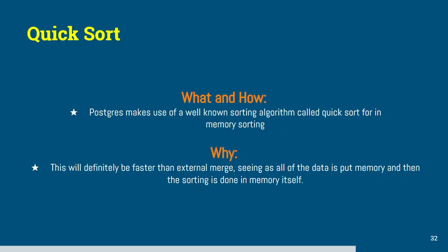A quicksort. A quicksort's a well-known sorting algorithm, called quicksort for in-memory sorting. Once again, in work memory. This is extremely fast, and there's quite a few variations to this from the normal vanilla variation that we are used to in Postgres. You can go look at the source code and find other variations. This will definitely be fast as all the data is put in memory and then the sorting is done in memory itself.